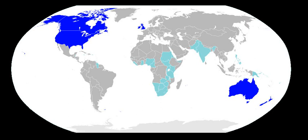Old English evolved into Middle English, which in turn evolved into Modern English. Particular dialects of Old and Middle English also developed into a number of other Anglic languages, including Scots and the extinct Fingalian and Forth and Bargy dialects of Ireland. The development of English on the British Isles isolated it from the continental Germanic languages and influences, and has since undergone substantial evolution. English is thus not mutually intelligible with any continental Germanic language, differing in vocabulary, syntax, and phonology, although some, such as Dutch or Frisian, do show strong affinities with English, especially with its earlier stages.